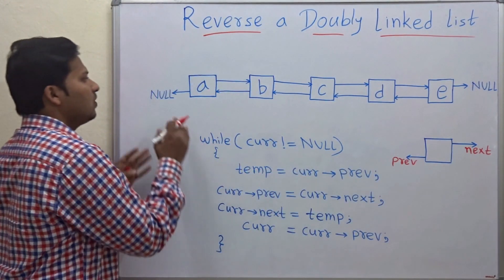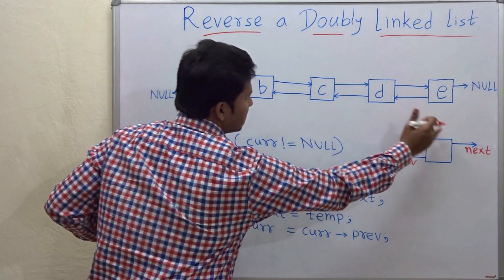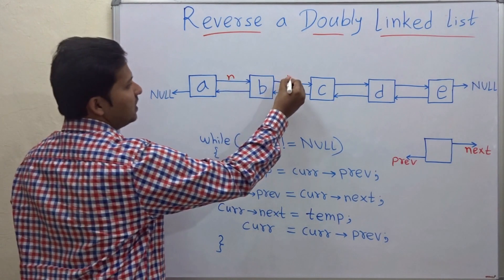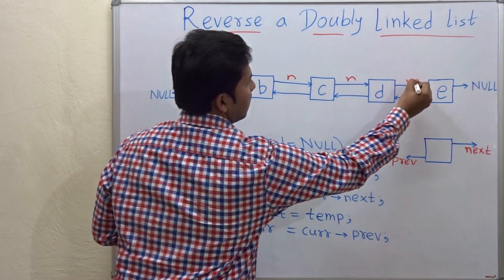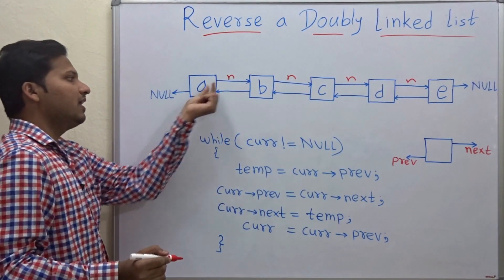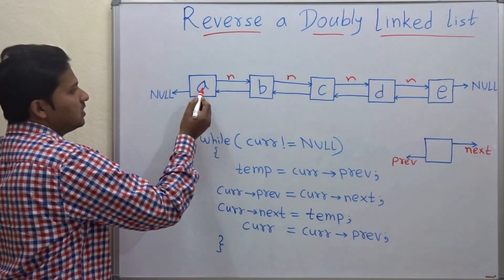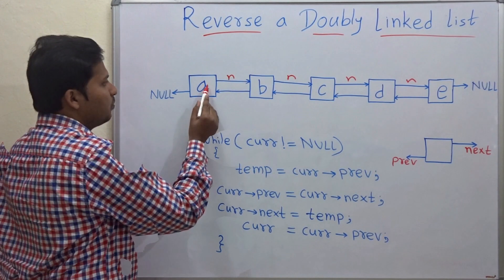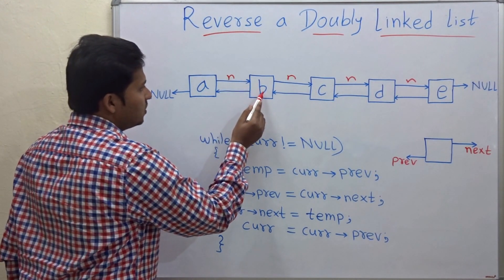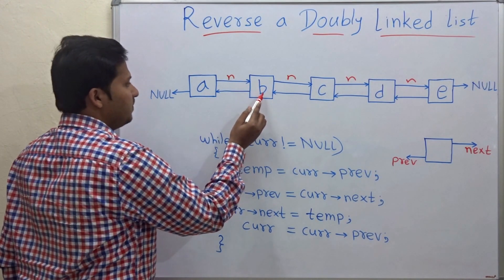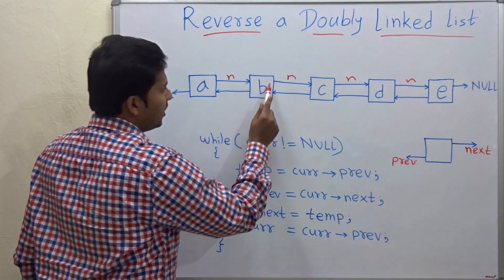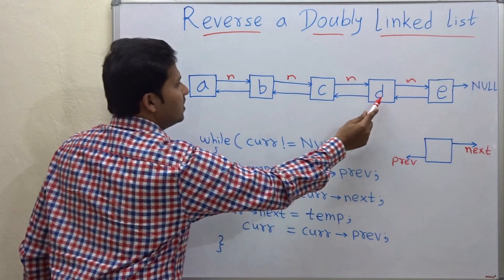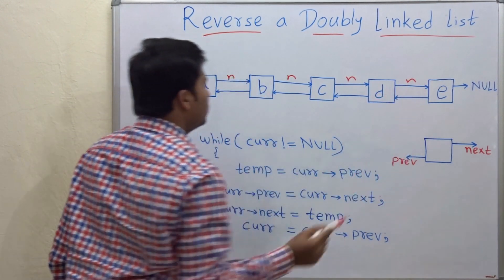Now we have to reverse this linked list. Currently the next pointer of each node is pointing to the next node. Node A points to node B, node B points to node C, node C points to node D, and node D points to node E.